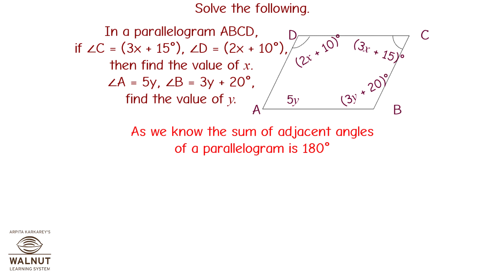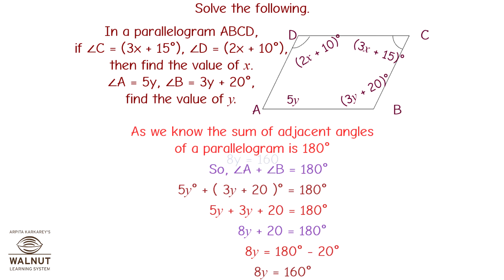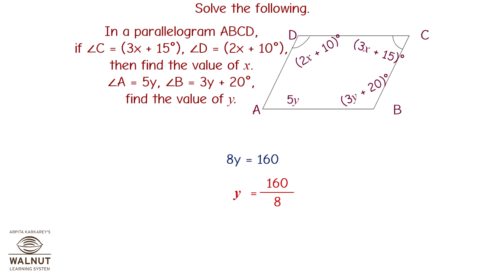Also, angle A equals 5Y and angle B equals 3Y plus 20 degrees. Find Y. Since adjacent angles sum to 180 degrees, 5Y plus 3Y plus 20 equals 180. So 8Y plus 20 equals 180, giving 8Y equals 160, and Y equals 20 degrees.